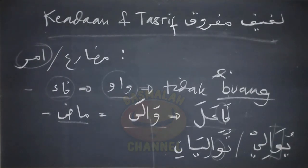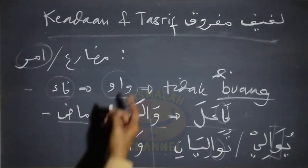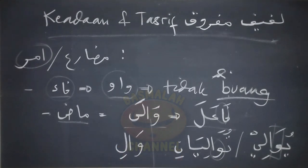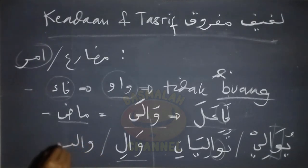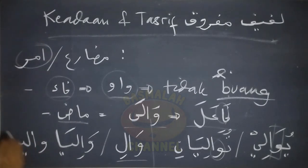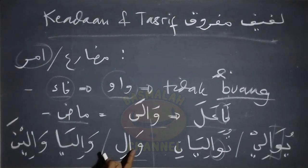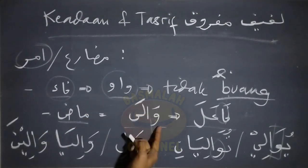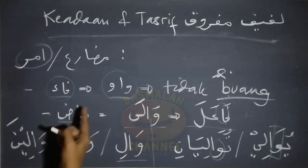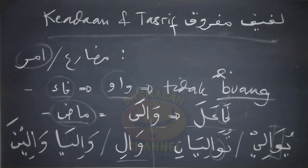Selanjutnya ketika berbentuk fi'il amar maka sama, waw pada fa fi'il di sini tidak dibuang, yaitu wali. Wala yuwali, wali. Ini adalah bentuk dari fi'il amarnya. Atau waliya, atau waliina. Semua ini adalah bentuk fi'il amar dari lafad yang berupa wala yang mana tidak memenuhi syarat yang pertama, karena bentuk fi'il madinya tidak berupa fi'il tulati mujarrad, maka waw yang ada pada fa fi'il di sana tidaklah dibuang.